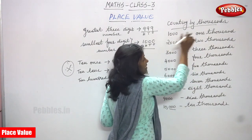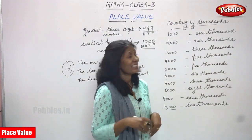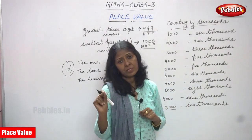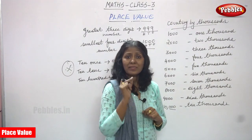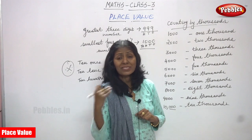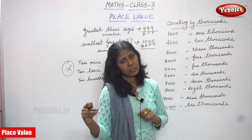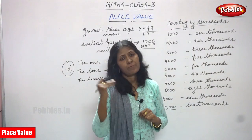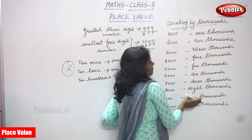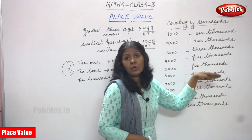You must memorize the numbers as well as the words, and you must know the spellings clearly. One thousand means one followed by three zeros. Two thousand means two followed by three zeros. Three thousand: three then three zeros. Four thousand: four then three zeros. Five thousand, six thousand, seven thousand, eight thousand, nine thousand, ten thousand — each time the digit is followed by three zeros.